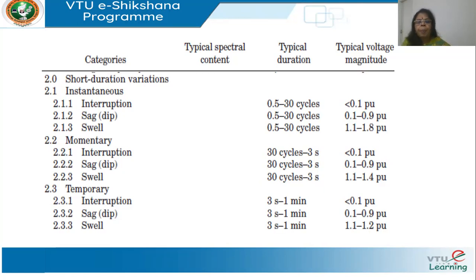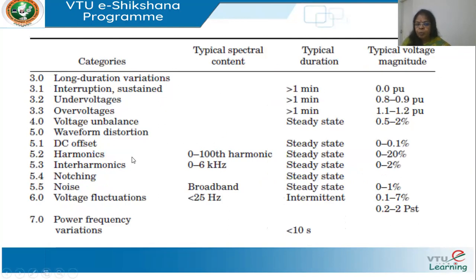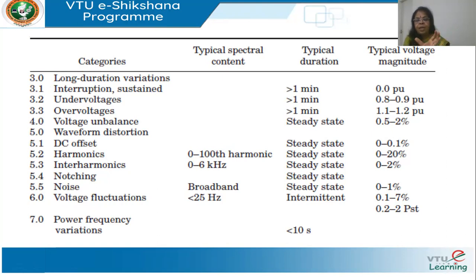The third category is long-duration variations. Interruption is the same as before — voltage falls below 10% — but it lasts for greater than one minute. If it lasts less than one minute, it is classified as instantaneous, momentary, or temporary. Under-voltage is like sag: the voltage is between 80% to 90% of nominal but lasts for more than one minute, with a likelihood of equipment damage.